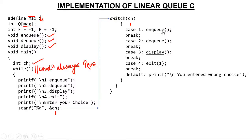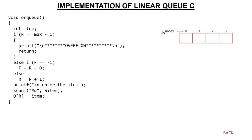I'm now inside the enqueue function. The code here is similar to the enqueue algorithm. I've created a local variable item; front and rear are global with value minus 1. I check: is rear equal to max minus 1? Rear is minus 1, max is 4, so max minus 1 is 3. Is minus 1 equal to 3? No — condition is false, so I will not print overflow.